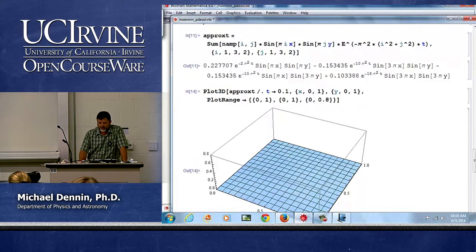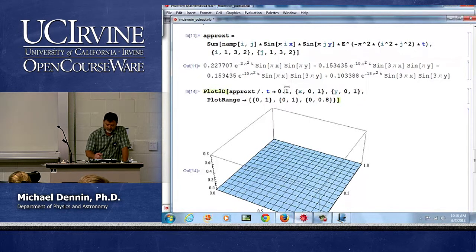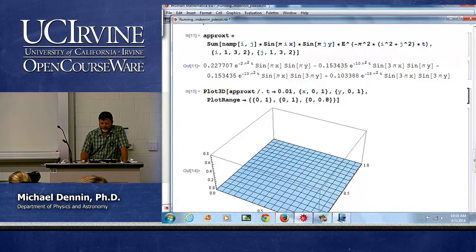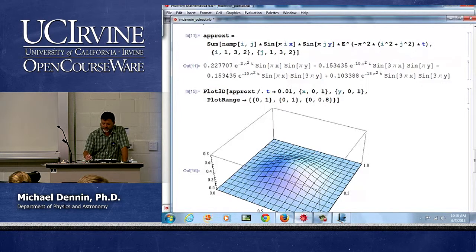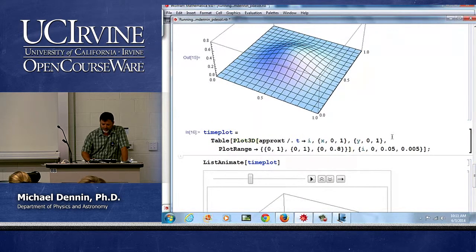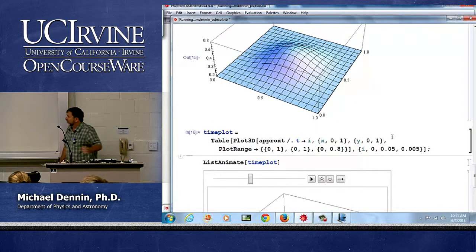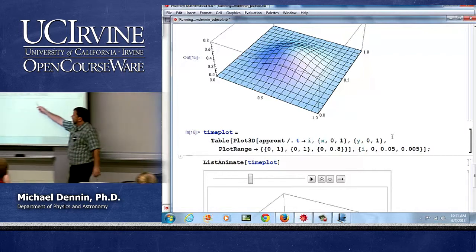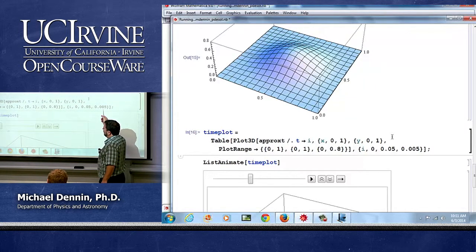Notice by the time I get to 0.1 it's already gone. At 0.01 it's still kind of there. So now if I generate a table I'm going to go up to 0.05 with my table. I'm going to go in steps of 0.005.